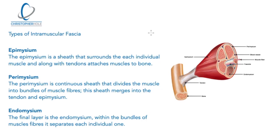Moving on to the perimysium — this is a continuous sheath that divides the muscle into bundles of muscle fibres, and these sheaths merge into tendons and epimysium. There are layers to fascia working from outer to inner and inner to outer, both at a muscular and a whole-body level. Currently the perimysium is not considered to contribute to force transmission like the epimysium; it can only show high tensile stiffness at very large extensions beyond the working range of the muscle.